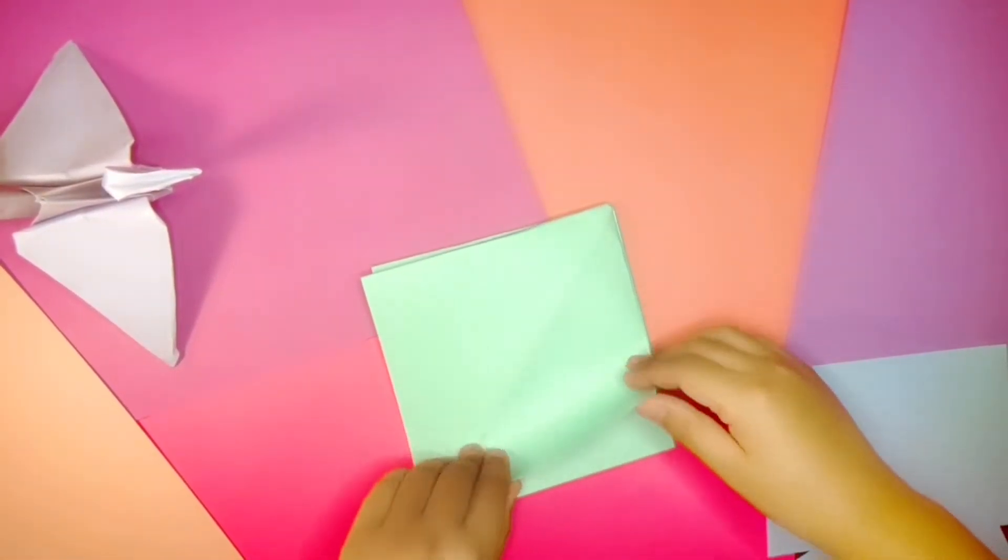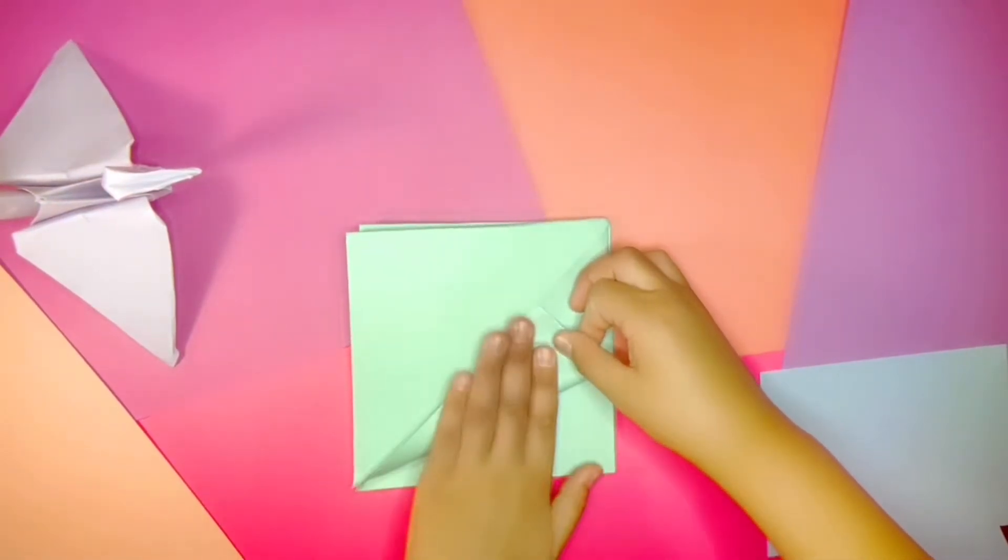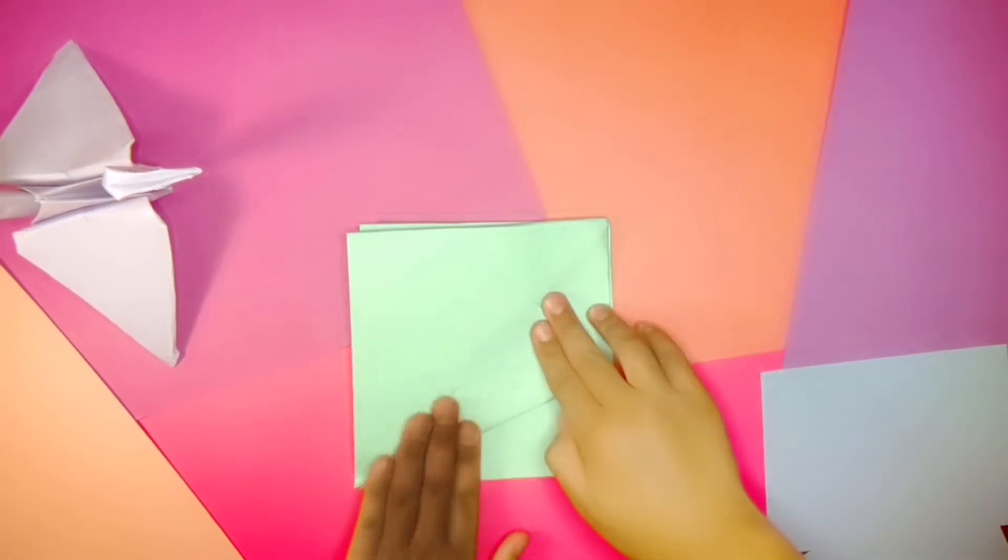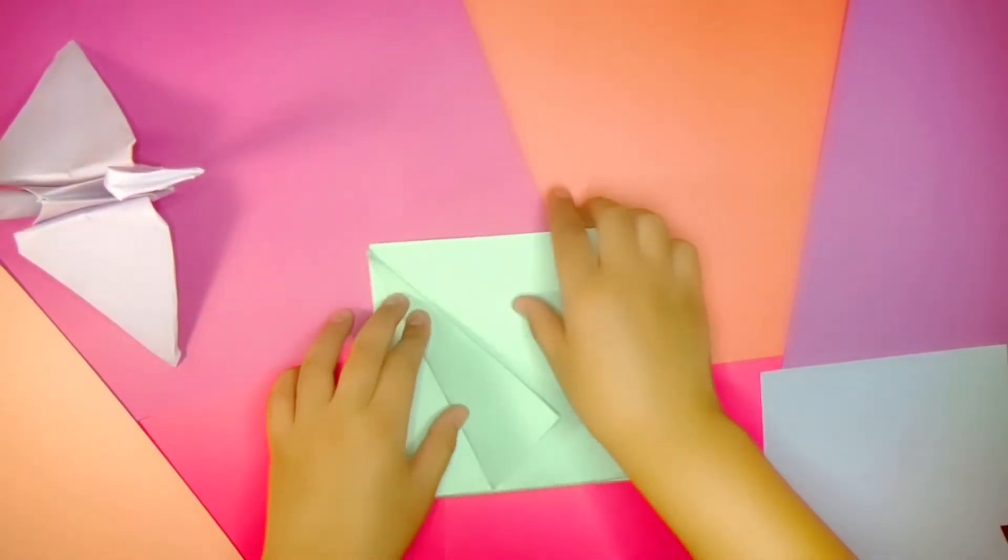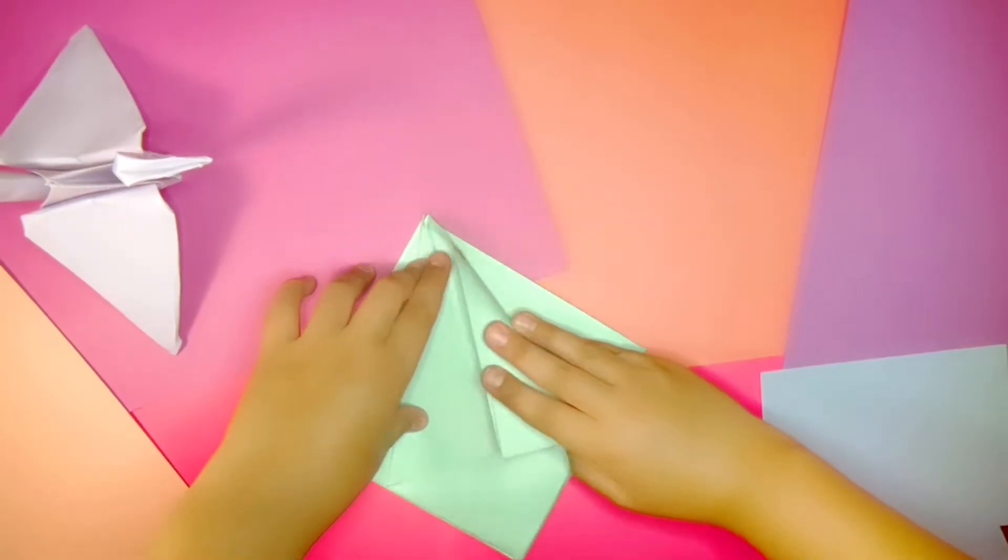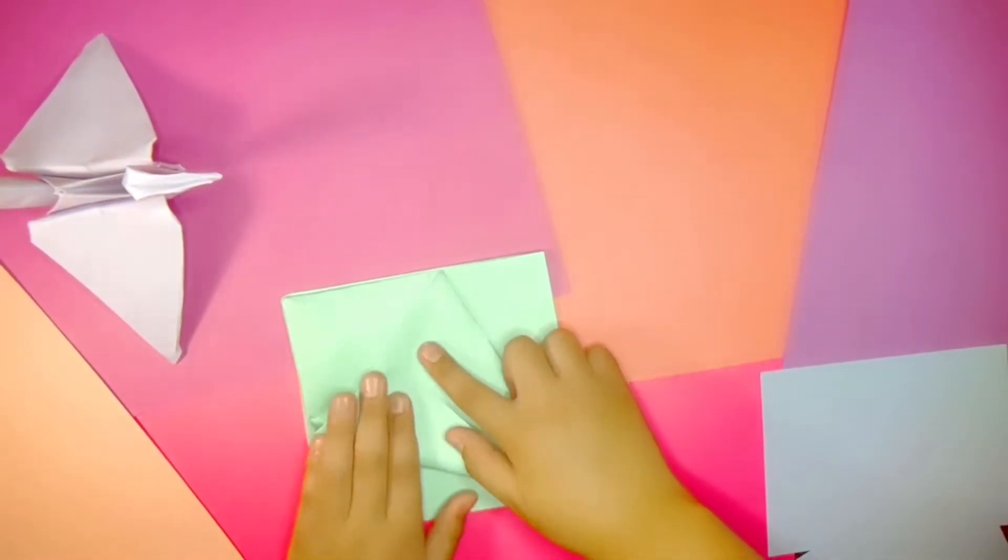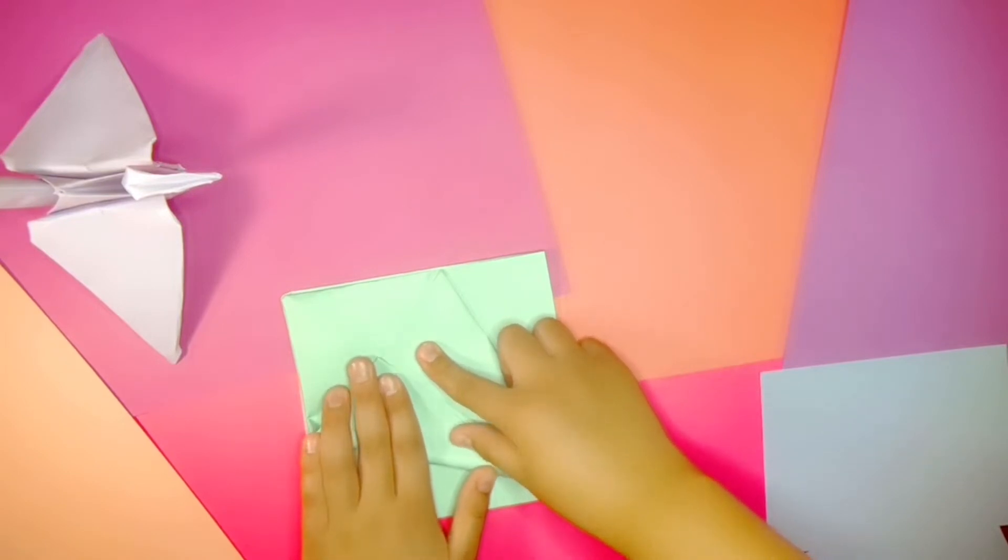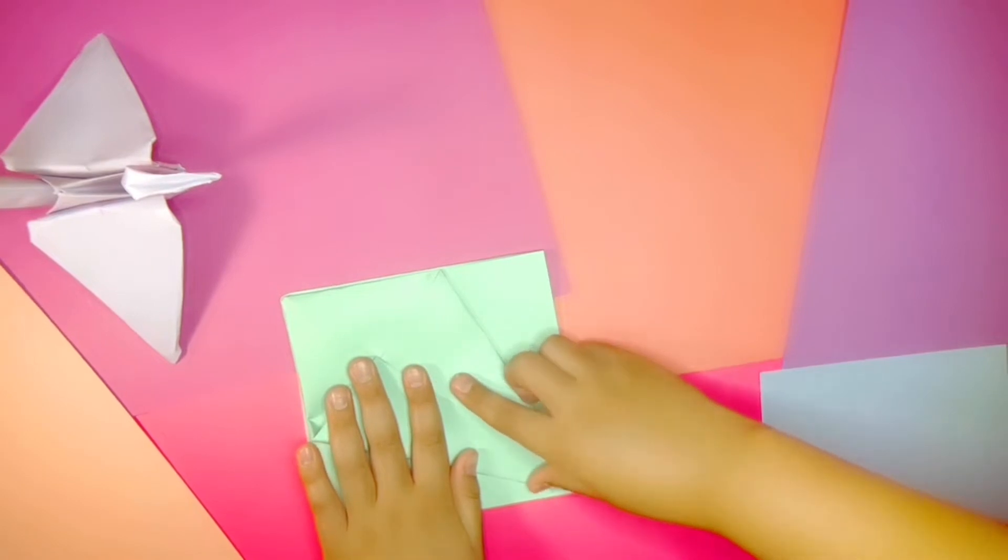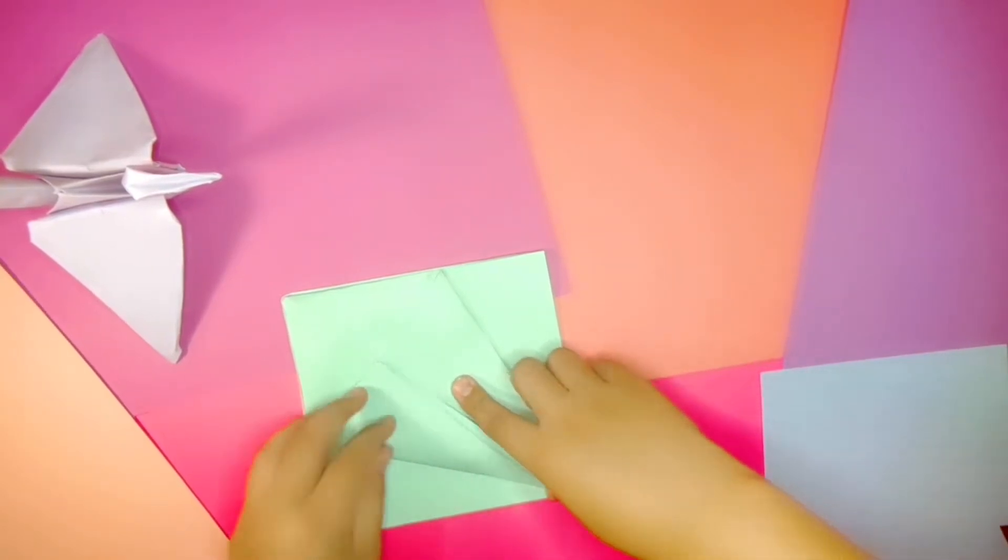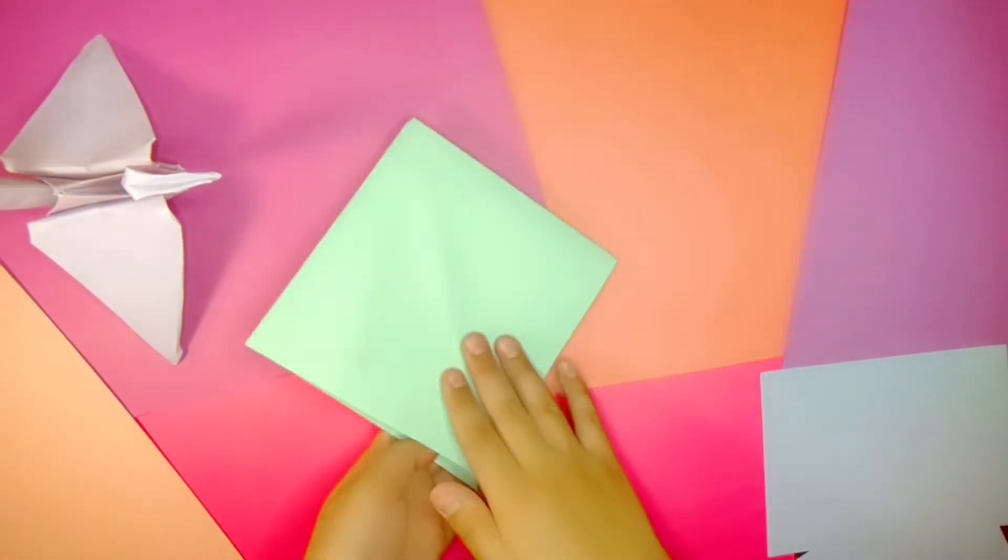Now you should do the Superman fold. With the flat corners still facing you, take the top right hand corner of the square and fold it into the center. Do the same on both sides. Flip and do the same thing.